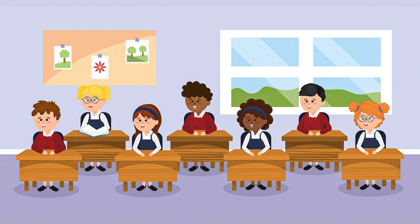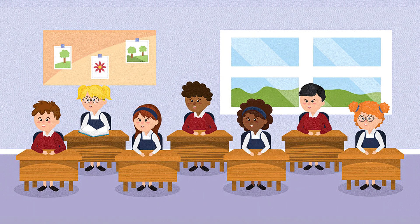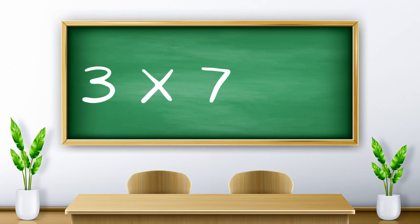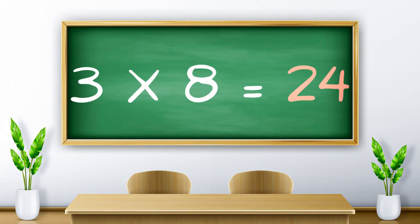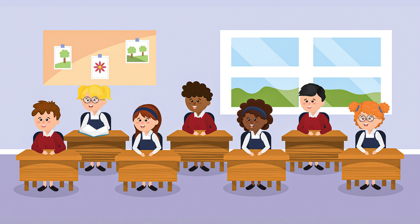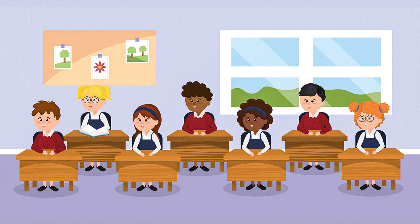Three fives are fifteen. Three sixes are eighteen. Three sevens are twenty-one. Three eights are twenty-four. Three nines are twenty-seven.